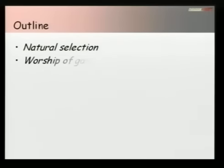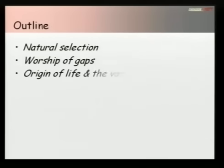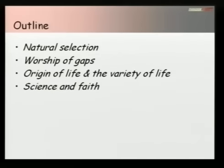We're going to look at the evidence and see whether it actually supports Professor Dawkins' thesis, or whether we could still have reason to believe in a creator God. I'm going to look at four main areas: natural selection, which Dawkins claims explains why we're here; the 'worship of the gaps' — his claim that creationists put God in the gaps; the origin of life and variety of life; and finally science and faith, because Dawkins has interesting things to say about what faith does to science.